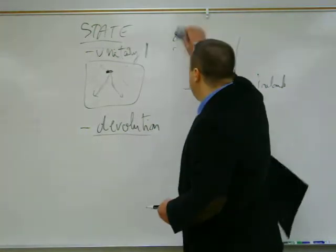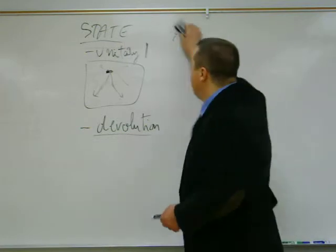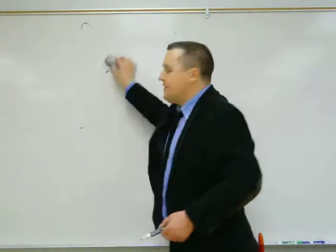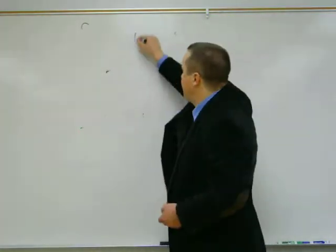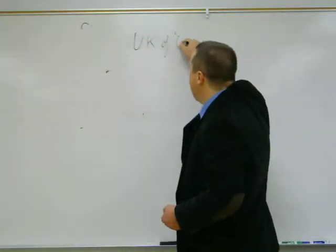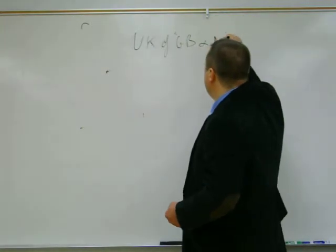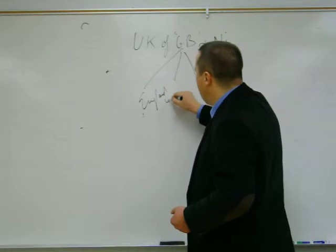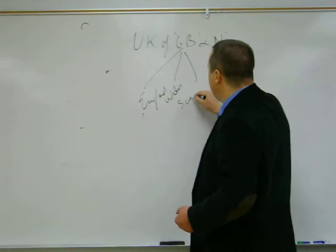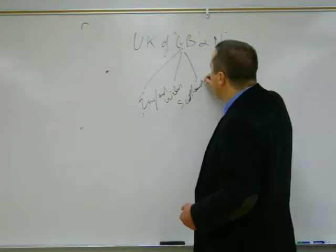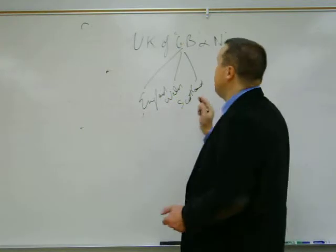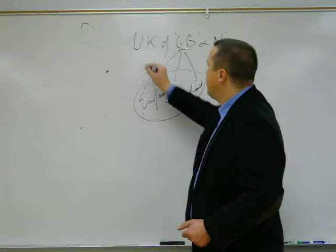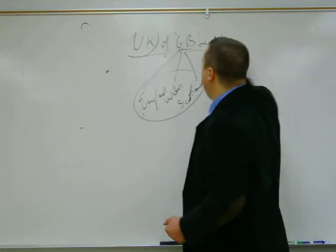So once again, let me now clarify what we're talking about. This is the United Kingdom of Great Britain and Northern Ireland. And Great Britain is composed of England, Wales, Scotland. So from now on, you are expected to use these expressions correctly. When you say Great Britain, that's this. When you say the United Kingdom, that's the whole thing.